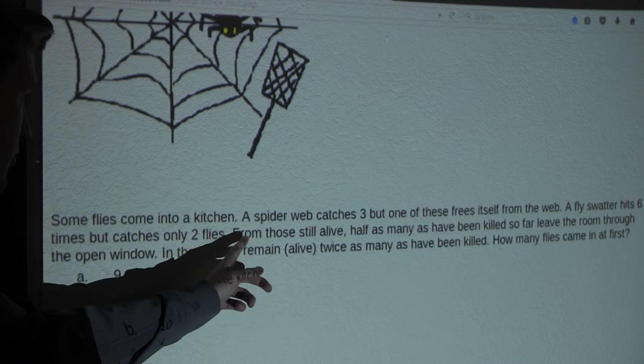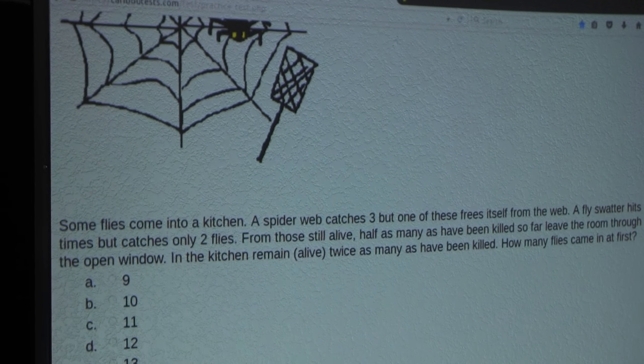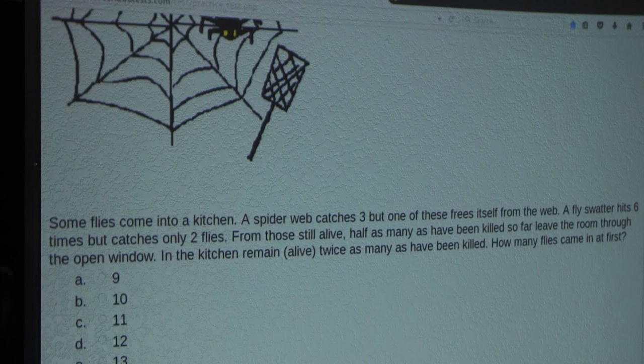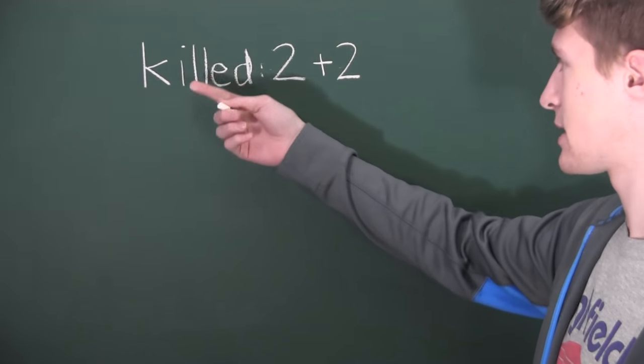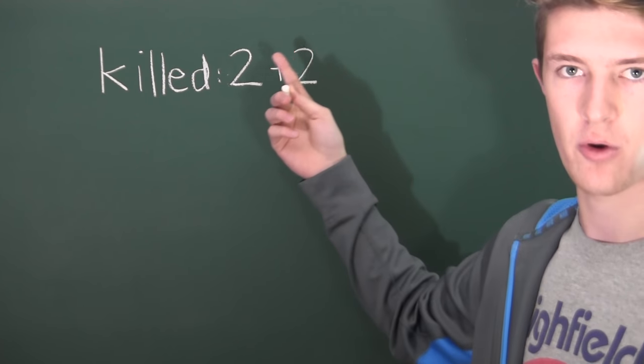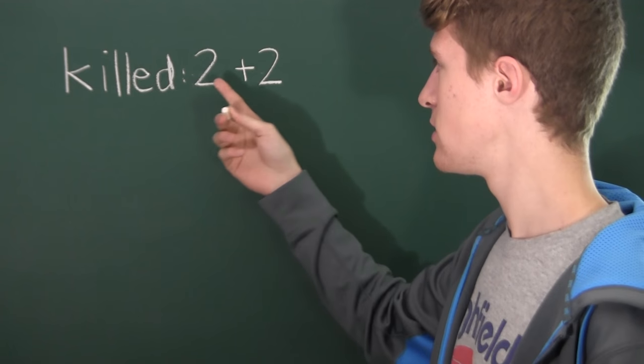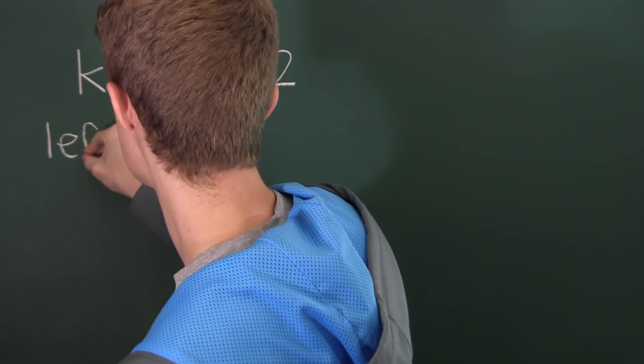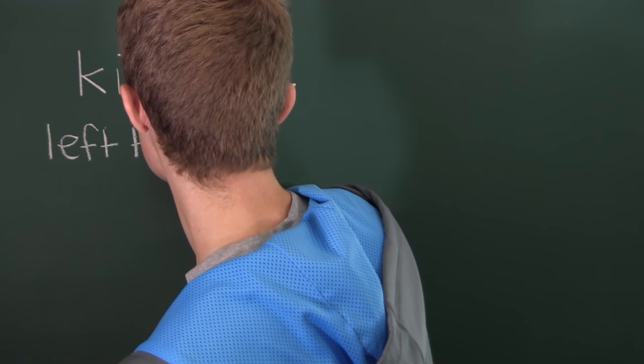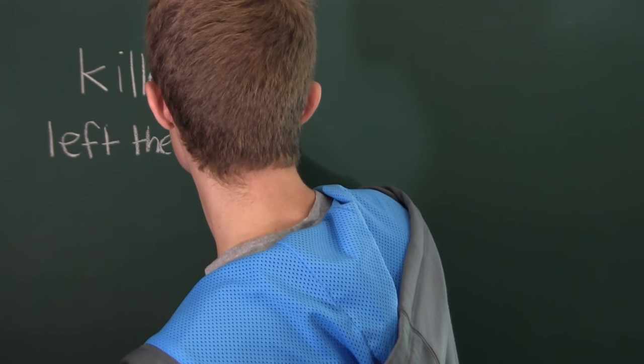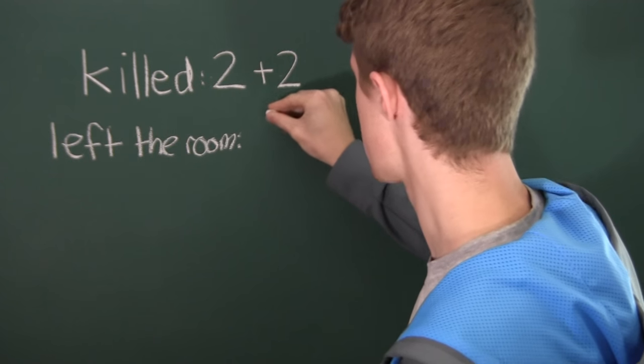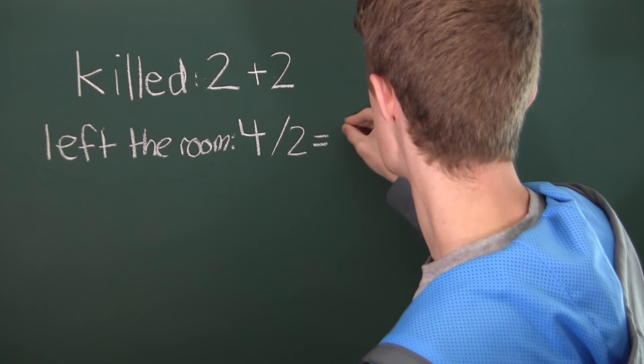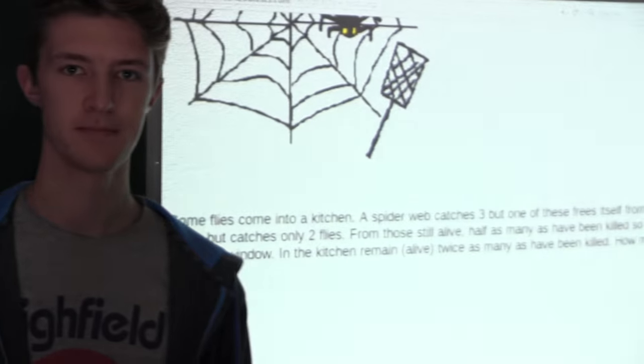Now the next sentence says from those still alive, half as many as have been killed so far leave the room through the open window. We know half as many as have been killed so far. So far, two plus two, which is four. Four have been killed so far. So we know four divided by two would then be two. So the ones that have left the room, this is four over two, which is equal to two.